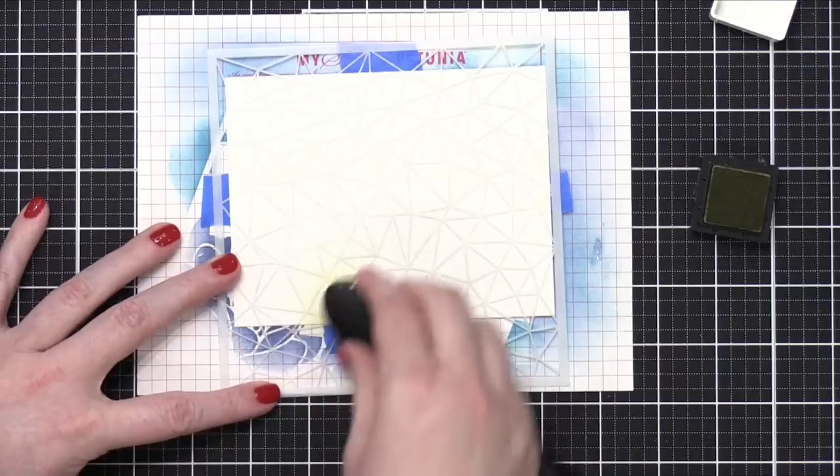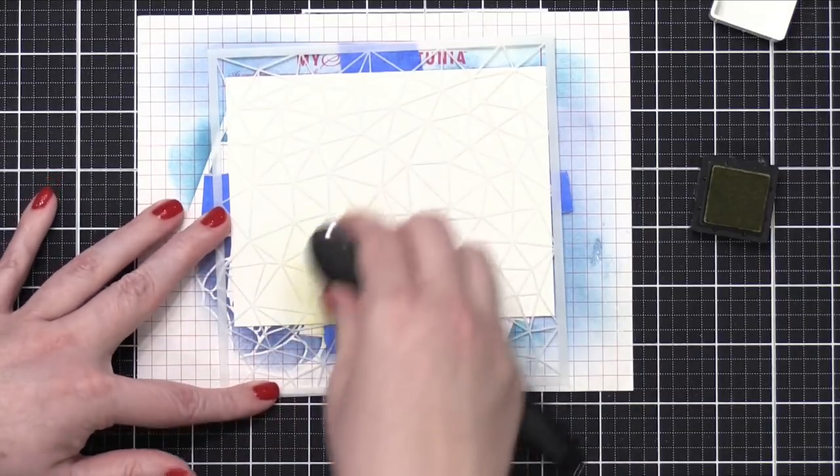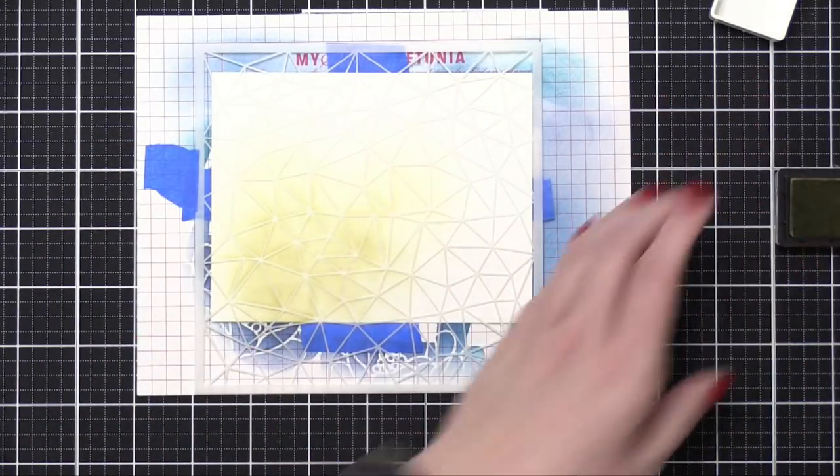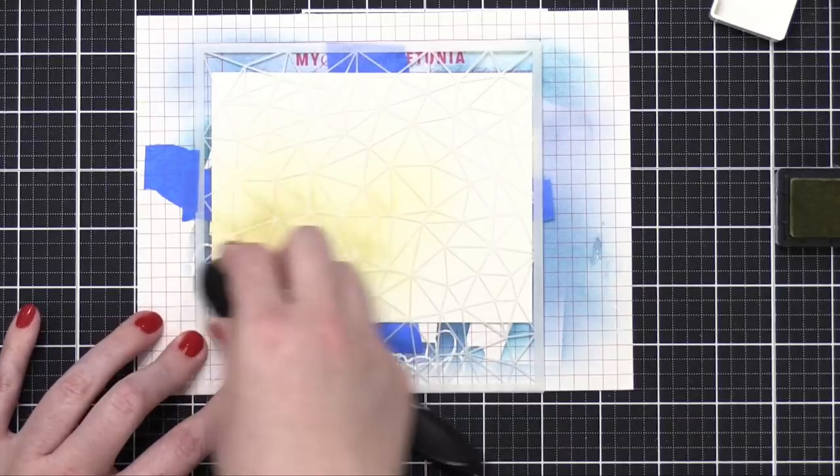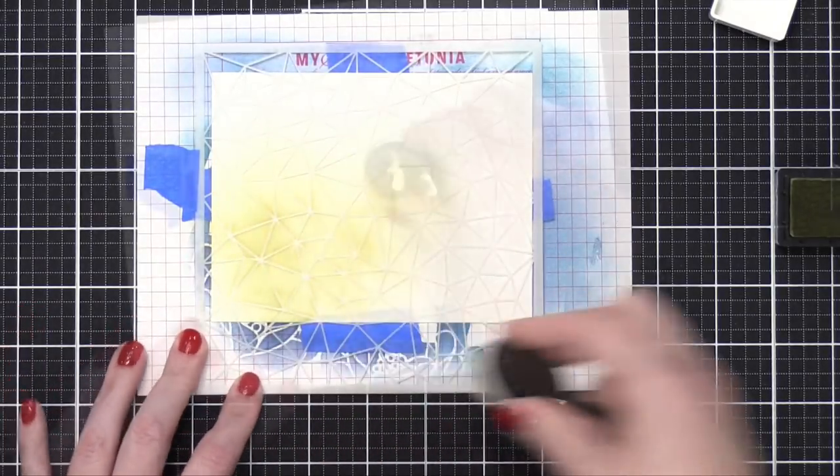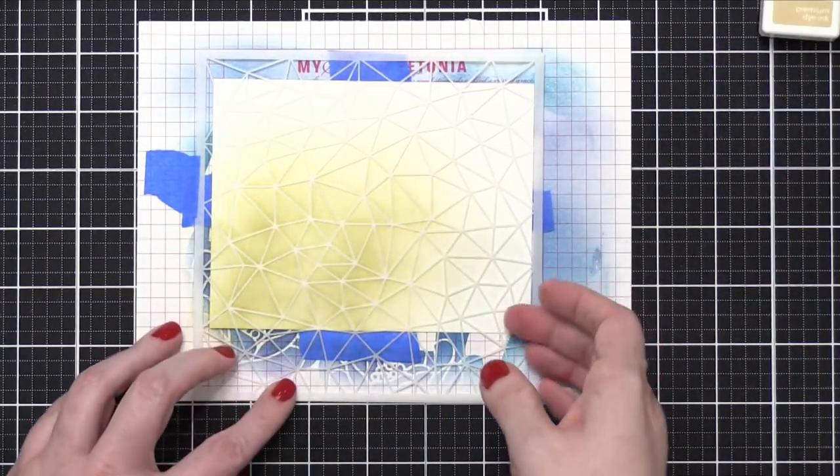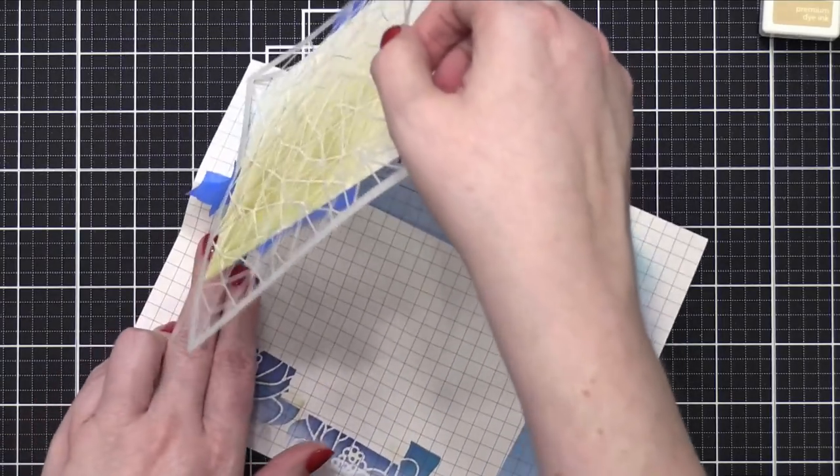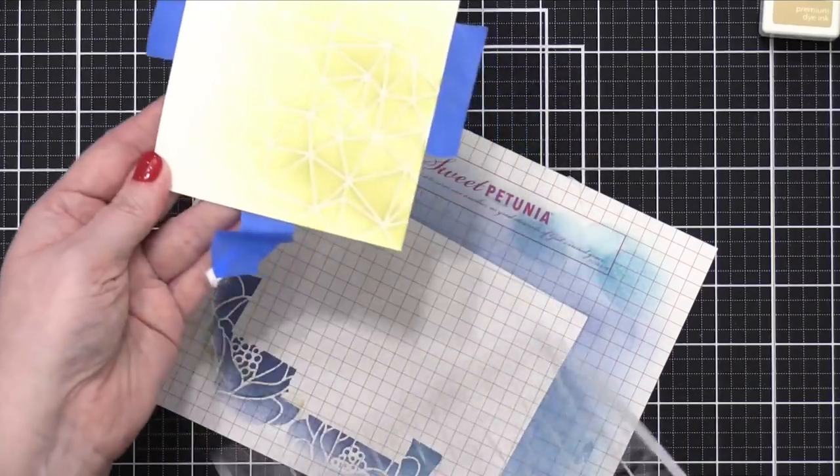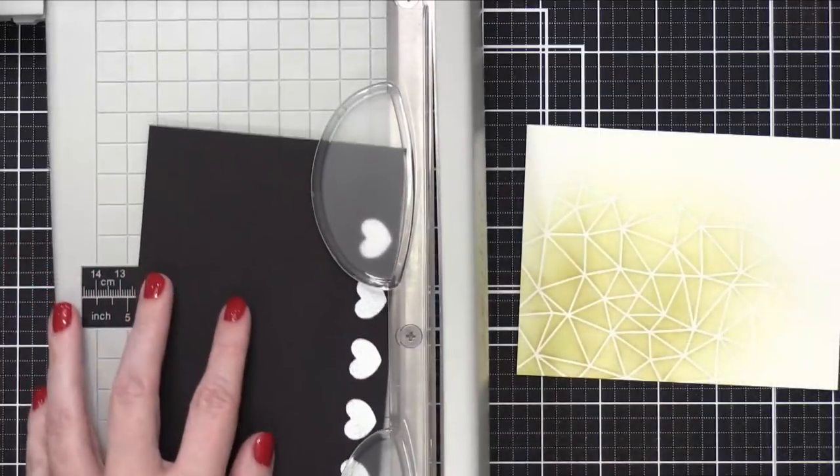I'm using the Sandy Beach Ink Cube from Gina K Designs and a blender brush from Honey Bee, and I'm just blending up this nice neutral color, coming in sort of from the bottom of my cardstock here. This is Neenah Classic Crest Solar White 110-pound cardstock, by the way, and it is cut to an A2 size, so it's four and a quarter by five and a half. After I had all that stencil blending on there, I removed the stencil.